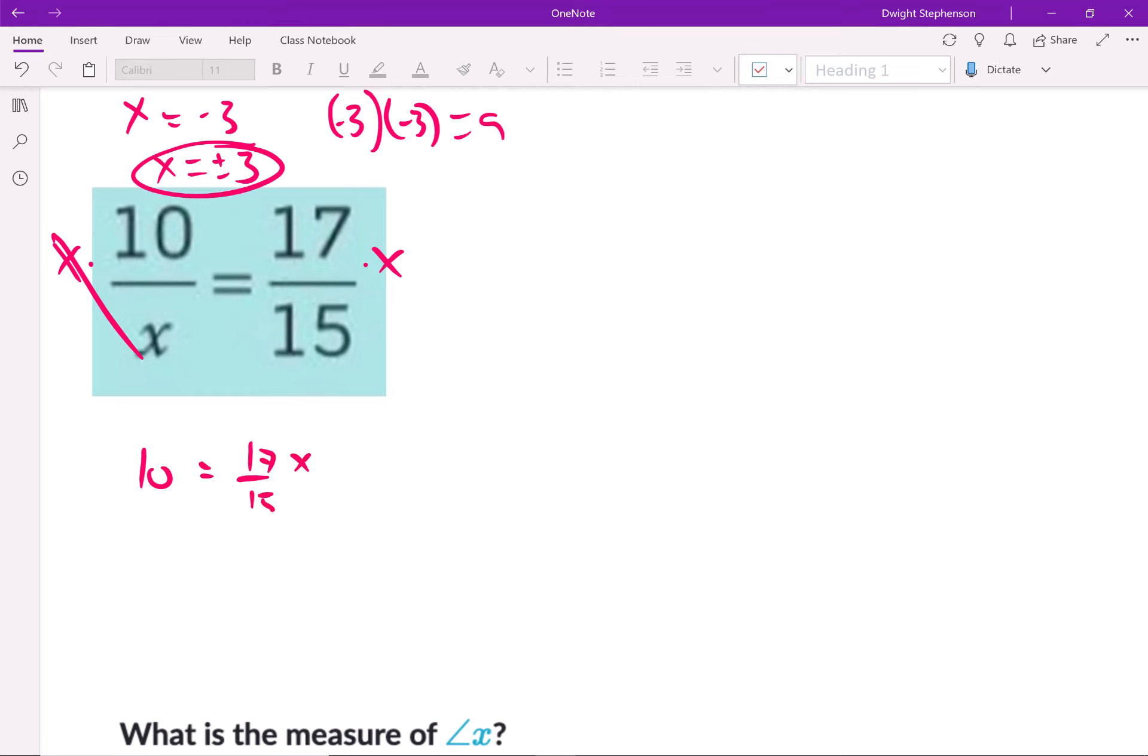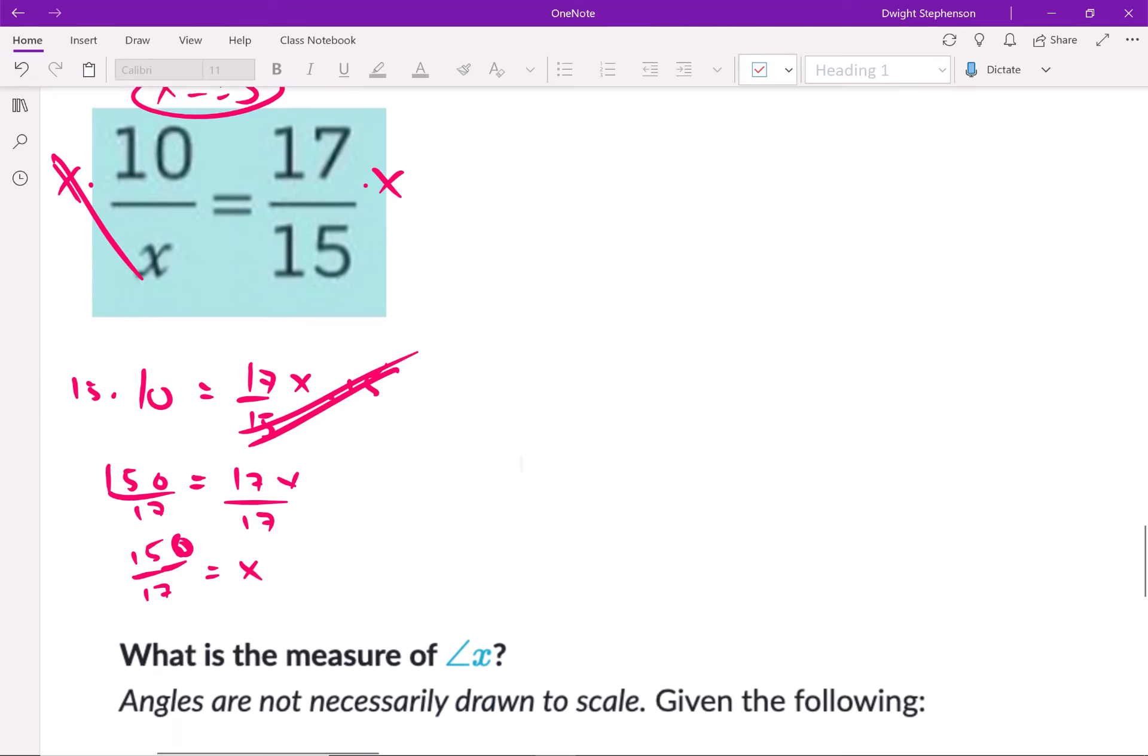You could then multiply both sides by 15. Why? Because those cancel here. And you're left with 150 equals 17x. And then you could divide both sides by 17. And that x that you get is 150 over 17. And you do that on a calculator and give you the decimal for it.